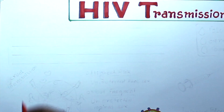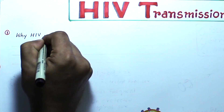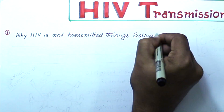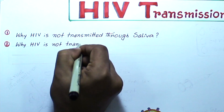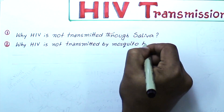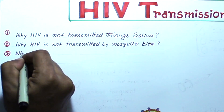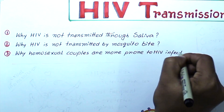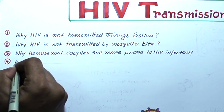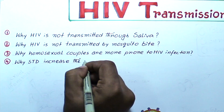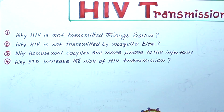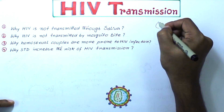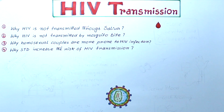First I would like to ask you some questions. Why is HIV not transmitted through saliva? Why is HIV not transmitted by mosquito bite? Why are homosexual couples more prone to HIV infection? And why do STDs or sexually transmitted diseases increase the risk of HIV infection? Let's discuss that.